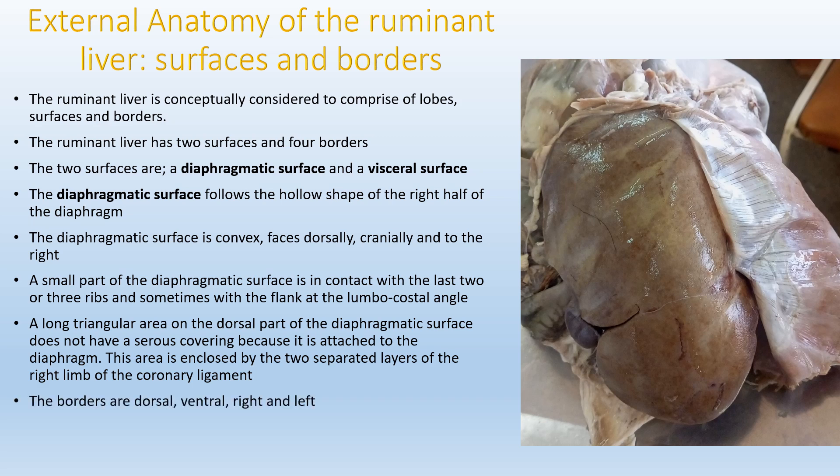The borders of the liver are the dorsal border, the ventral border, the right border and the left border. The dorsal border lodges the vena cava in an area known as the sulcus vena cava.